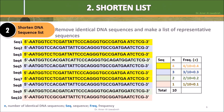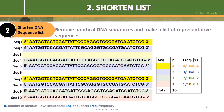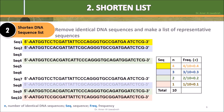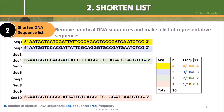Step 2: Shorten list. Remove identical DNA sequences and make a list of representative sequences. The population has 4 alleles of DNA sequences.